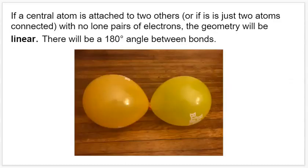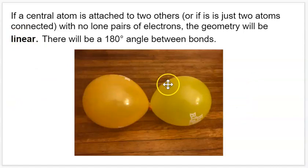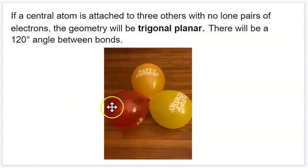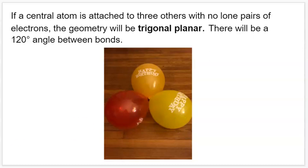If a central atom is only attached to two other atoms with no lone pairs, we form a linear geometry — an atom in the center and an atom at each end, with a 180-degree angle between bonds. If a central atom is bound to three other atoms with no lone pairs, we get a trigonal planar geometry. Trigonal because it's three, planar because it's flat. The bonding orbitals are at 120-degree angles from each other.